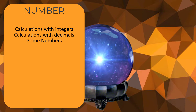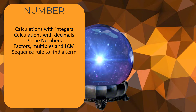Prime numbers: I'd recommend memorising all your primes up to 100 so you can spot them in a list. Factors, multiples and LCMs — least common multiples. Can you list all the factors of a number? Can you write down the first so many multiples? Can you find the lowest common multiple of two numbers? Sequence rule for finding a term: sequences is normally an algebra topic, but here they're likely talking about following a rule — for example, take the last term, double it and subtract three — so just being able to create a sequence from a rule.